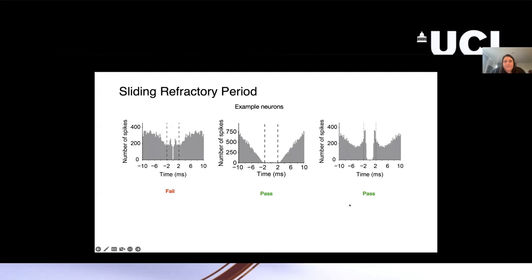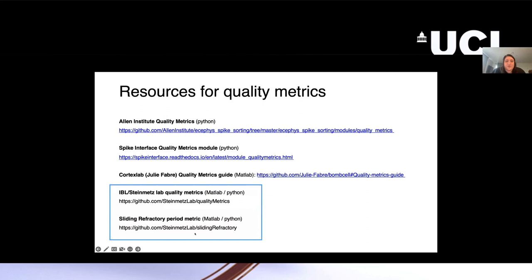I know I really sped through that, but here are the actual code resources for this. We have a quality metrics repository on GitHub where we have this coded up both in MATLAB and Python. Feel free to check that out, and let me know if you have any questions. Here are some of the other resources that Julia and Alessio talked about, and that is all, so I'm happy to take questions.